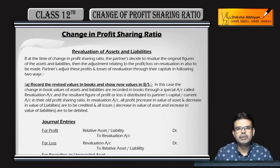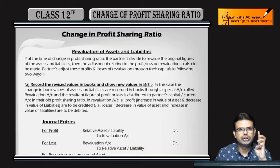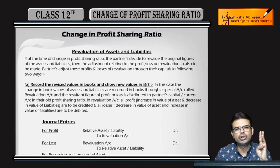As I told you, we have three adjustments in this chapter: goodwill, undistributed profits or reserves, and revaluation of profit and loss.